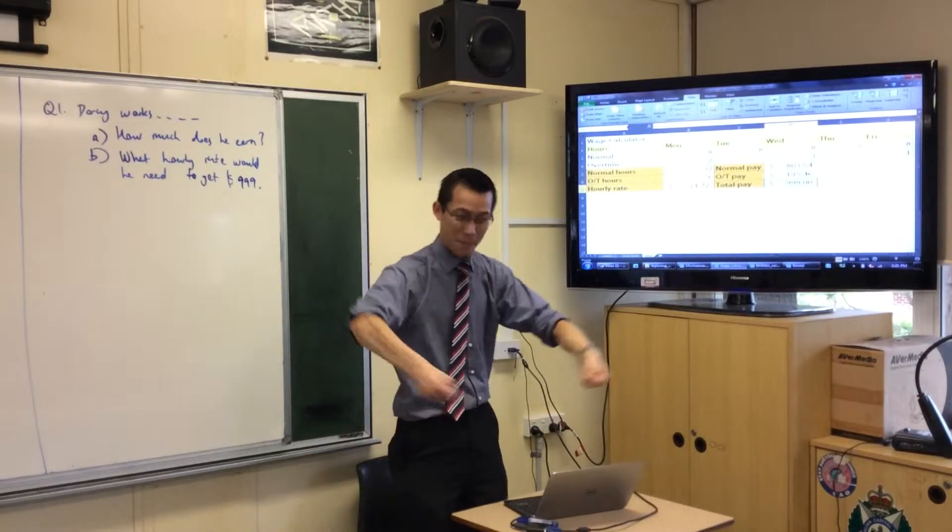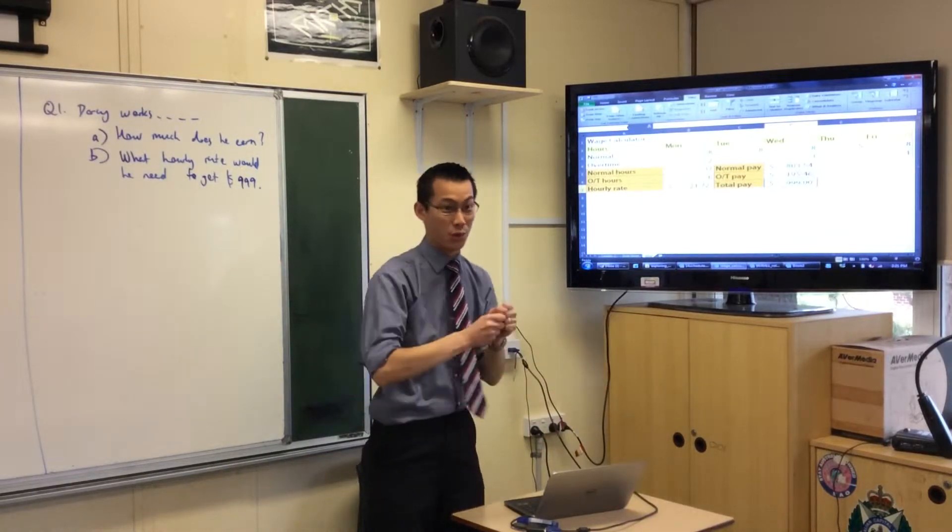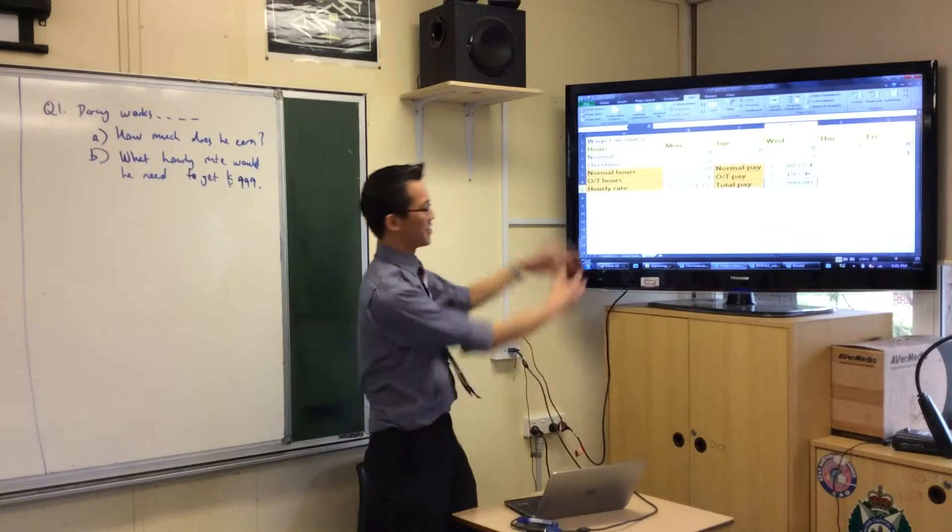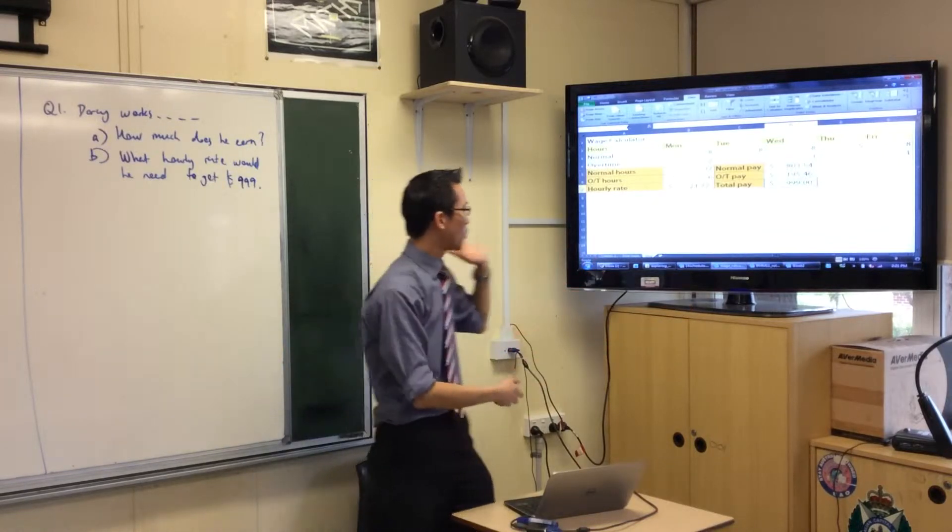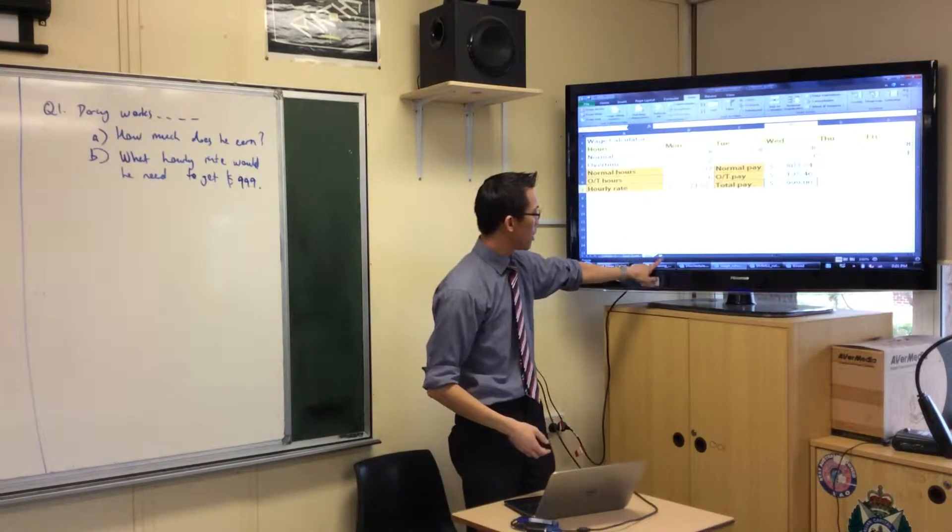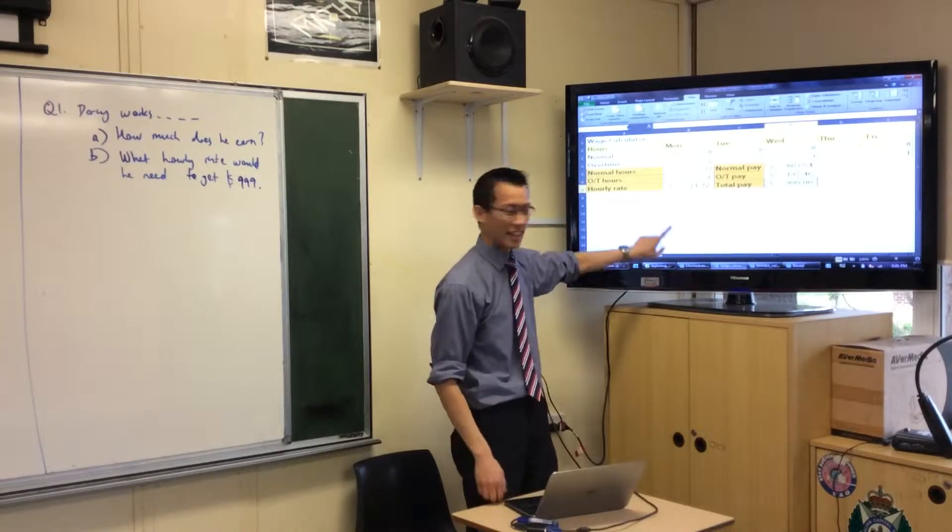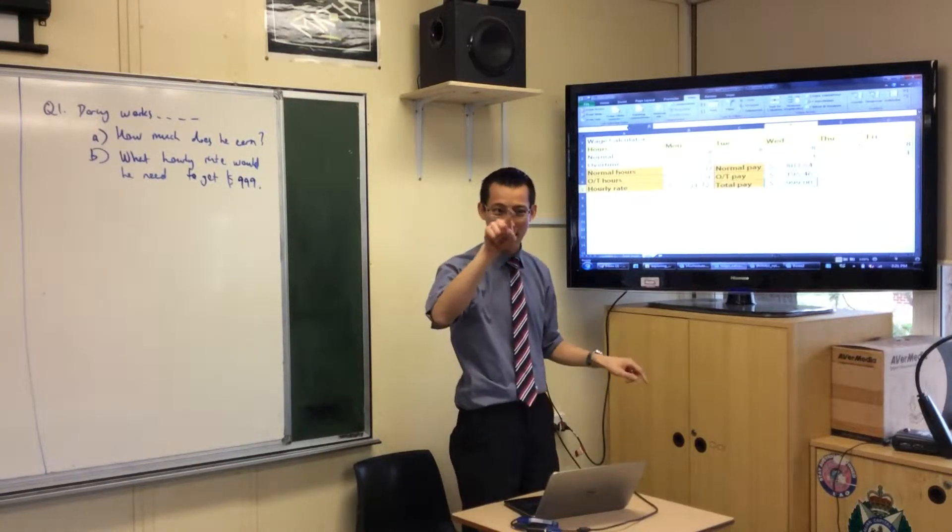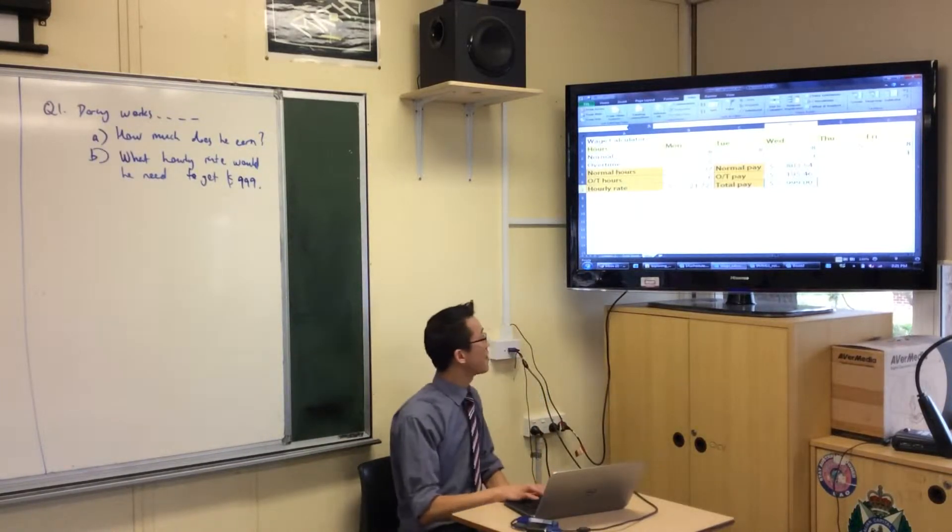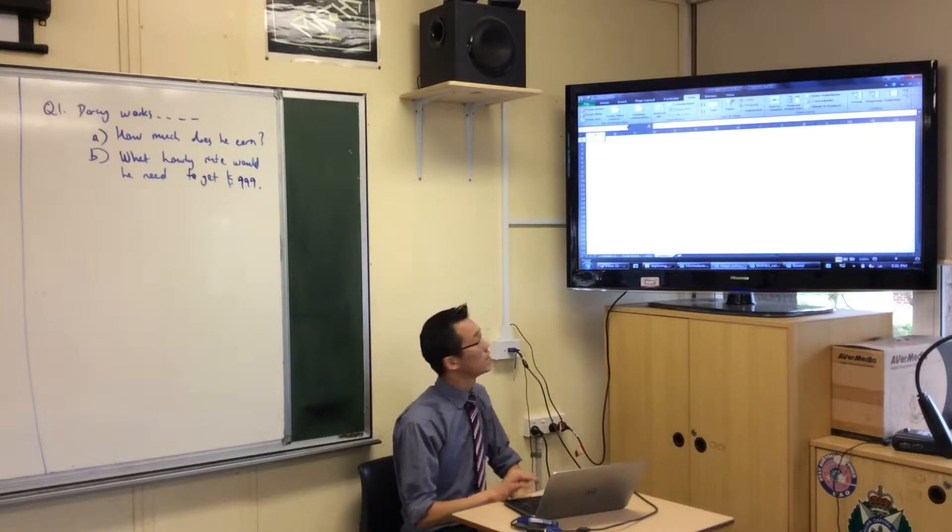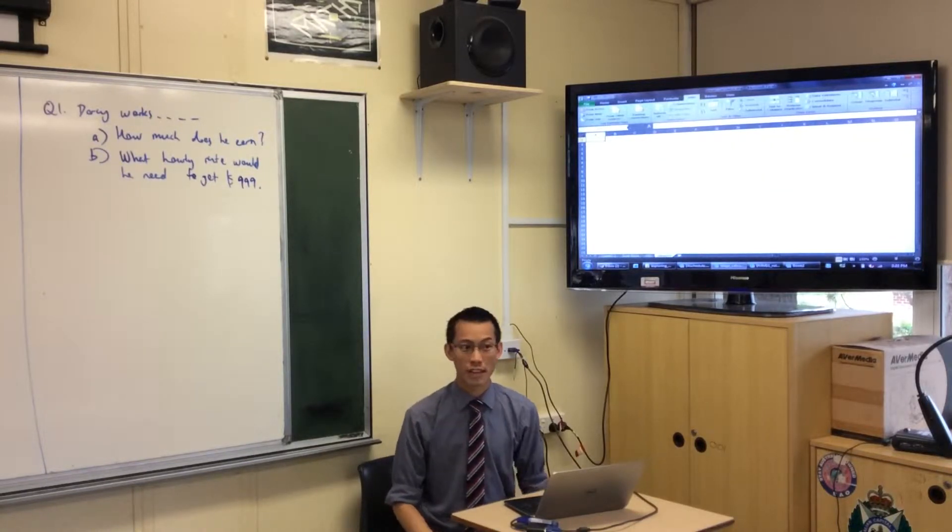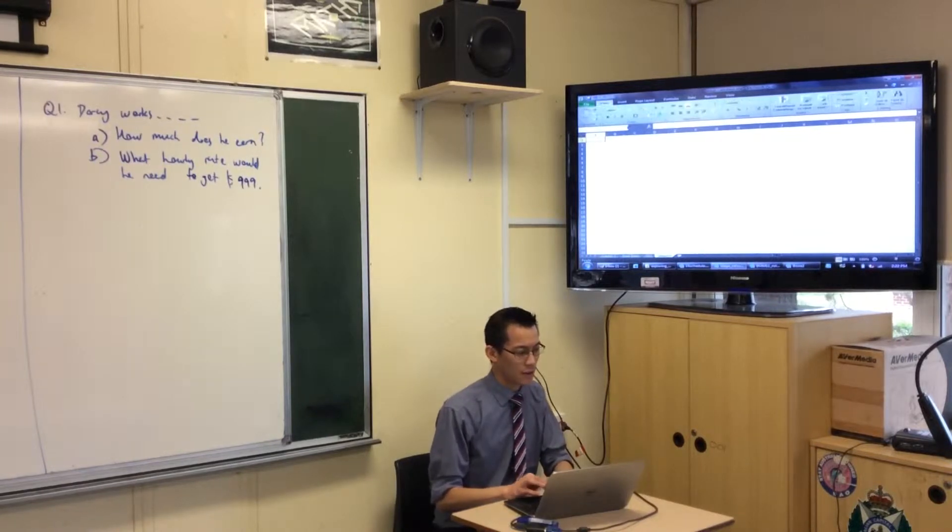They're called spreadsheets because literally they were like big pieces of paper and you'd get a big table and you would spread it out so you can see all the data. What I want you to do is hit this new sheet icon, it's like a little rectangle and it's got an orange star on it. That'll give you, surprise surprise, a blank sheet.